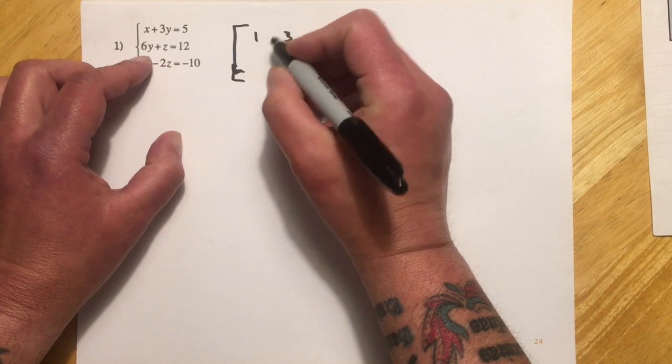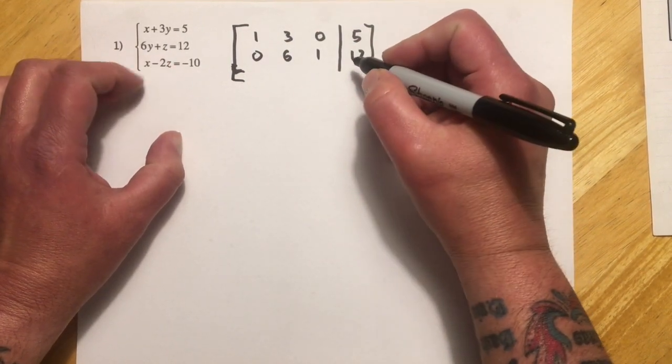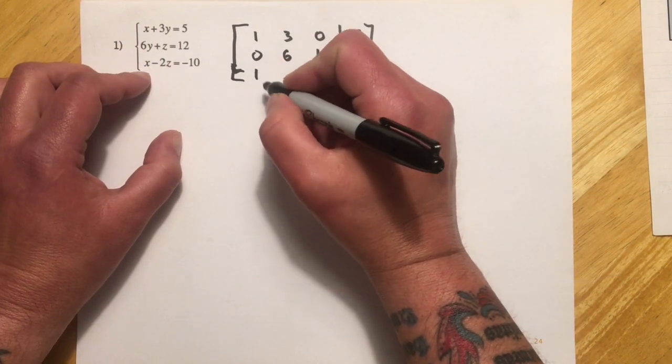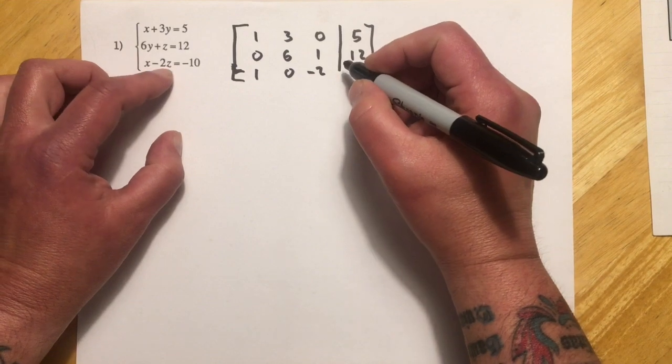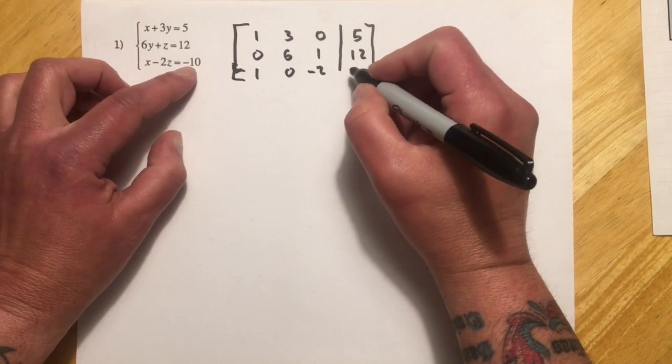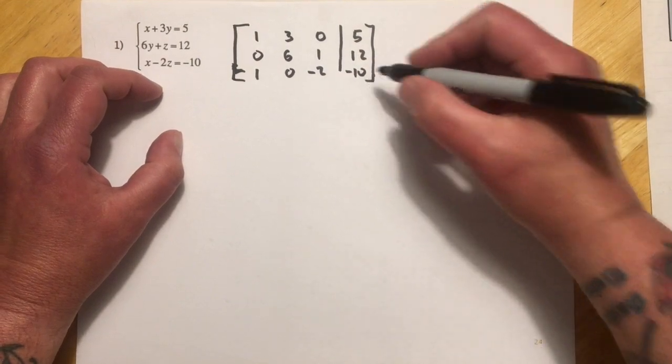And then this one would be nothing in x, six in y, one in z, and then twelve. And this would be one x, nothing in y, and then minus two for the z term and negative ten. So that's what I mean by an augmented matrix.